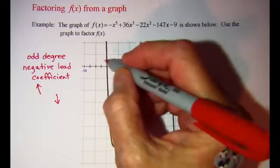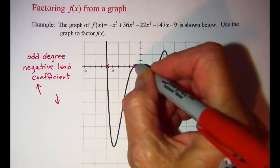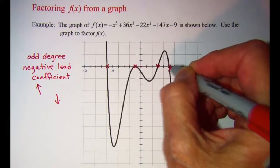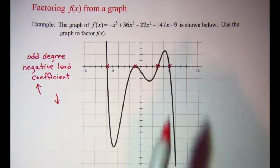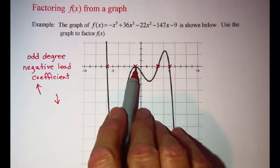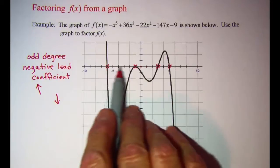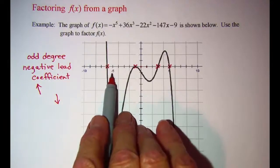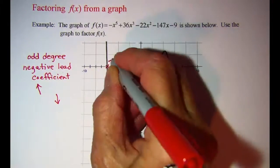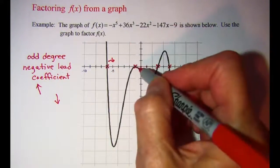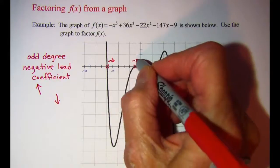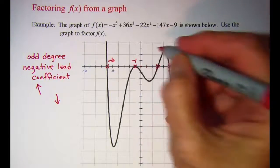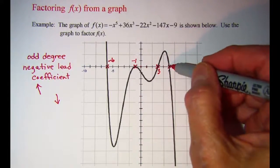We also see that we have zeros here, here, here, and here. Now we need to determine the numbers for those zeros. It looks like our axis is numbered by ones. So this zero is at negative six, this zero is at negative one, this zero is at three, and this zero is at five.